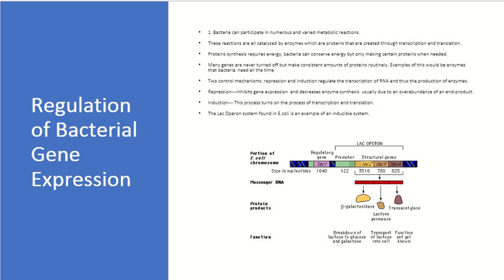Regarding the regulation of bacterial gene expression: bacteria can participate in numerous varied metabolic reactions, all catalyzed by enzymes — proteins created through transcription and translation. Protein synthesis requires energy, but bacteria can conserve energy by only making certain proteins when needed. Many genes are usually turned off, but some make consistent amounts of proteins routinely. There are two control mechanisms for gene regulation: repression and induction, which regulate the transcription of RNA and thus the production of enzymes. Repression inhibits a gene from being expressed, decreasing enzyme synthesis, usually due to an overabundance of an end product. Induction is the process that turns on transcription and translation.